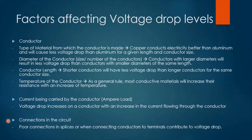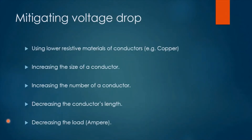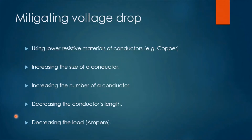Connections in a circuit may also have an effect on the voltage drop level. Poor connections, especially when connecting conductors to terminals, contribute to increasing the amount of voltage drop. To mitigate or decrease voltage drop in a system, we can apply different techniques: using lower resistive materials like copper instead of aluminium, increasing the size of a conductor, increasing the number of conductors, decreasing the conductor's length, and by reducing the load or current passing through a conductor.